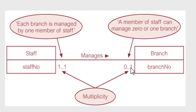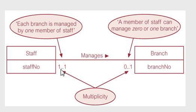If it was 0 or more, it would be 0..* (0 dot dot star). If it was 1 or more, it would be 1..* (1 dot dot star). So we read it this way — you can see my mouse moving. Staff manages 0 or 1 branches, but it can also be looked at in reverse. A branch is managed by exactly 1. 1..1 means exactly 1.